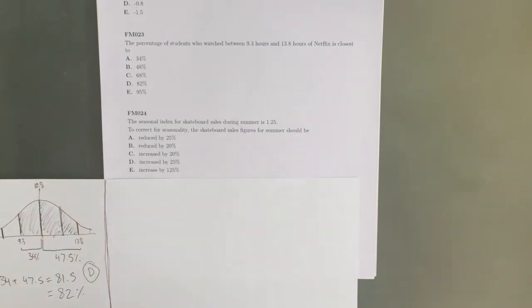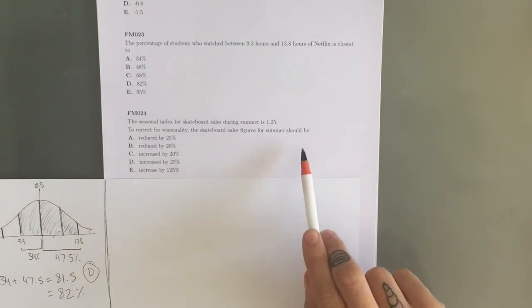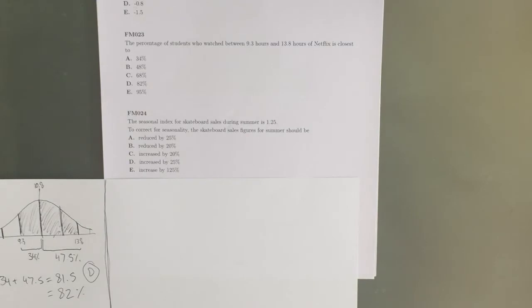The seasonal index for skateboard sales during summer is 1.25. To correct for seasonality, the skateboard sales figures for summer should be, and we've got these reductions and increases running along here.